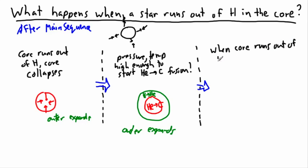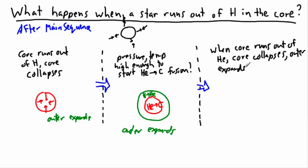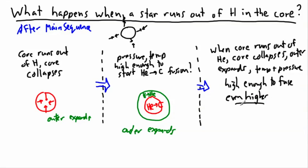When the core runs out of helium, the same thing happens again: core collapses, outer expands. The temperature and pressure might be high enough to fuse even heavier elements. This process repeats — you fuse carbon to something else, then run out of carbon and fuse the next thing. Each time, new layers form, the outer part keeps expanding, and the core keeps collapsing, getting hotter and denser, making the next element.